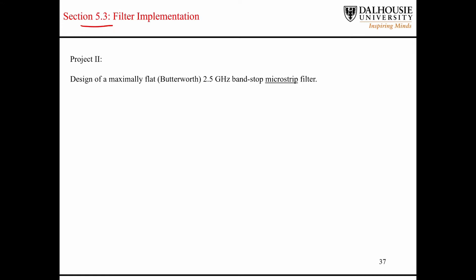In this section of the text, there's kind of two examples. He calls them projects, project 1 and project 2. We're looking at project 2 right now, and it is the design of a maximally flat 2.5 gigahertz band-stop microstrip filter.